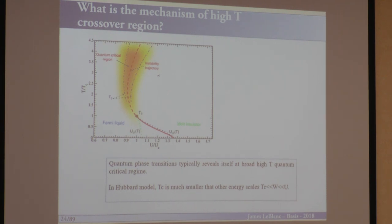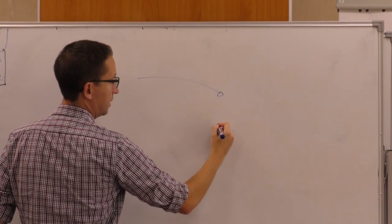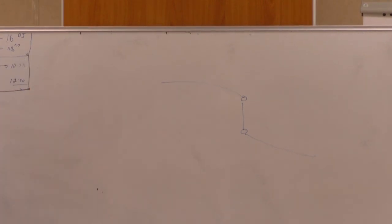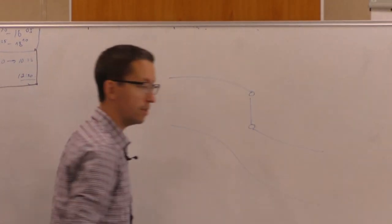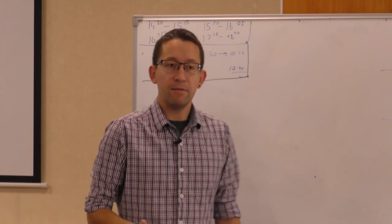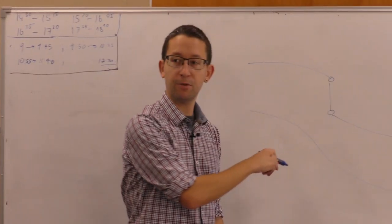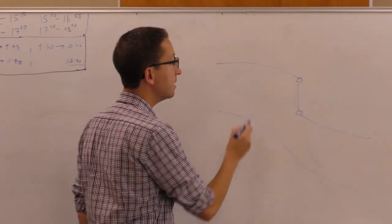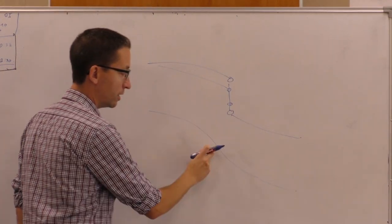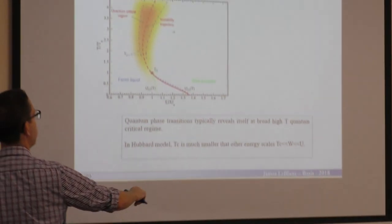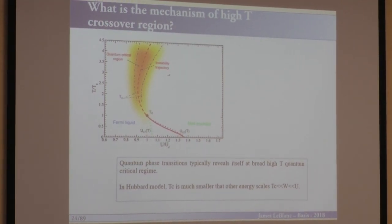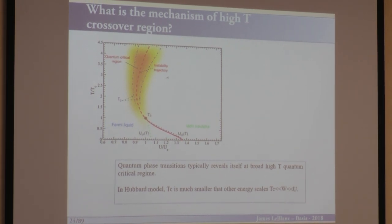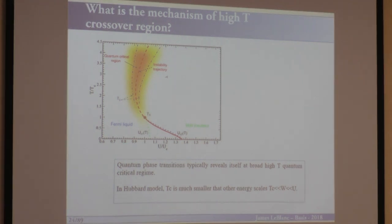Remember, the definition of a first-order phase transition says you have some observable with a discontinuous jump. But at some high temperature, that discontinuous jump might simply smooth out. It's not allowed that this is purely some thermal smearing — typically what you actually see is that as you go up in temperature, the coexistence region closes. Eventually you hit a critical point TC, above which you're no longer talking about a phase transition but rather a crossover, where you've lost the ability to explicitly define some order parameter but still have some change in a macroscopic observable.